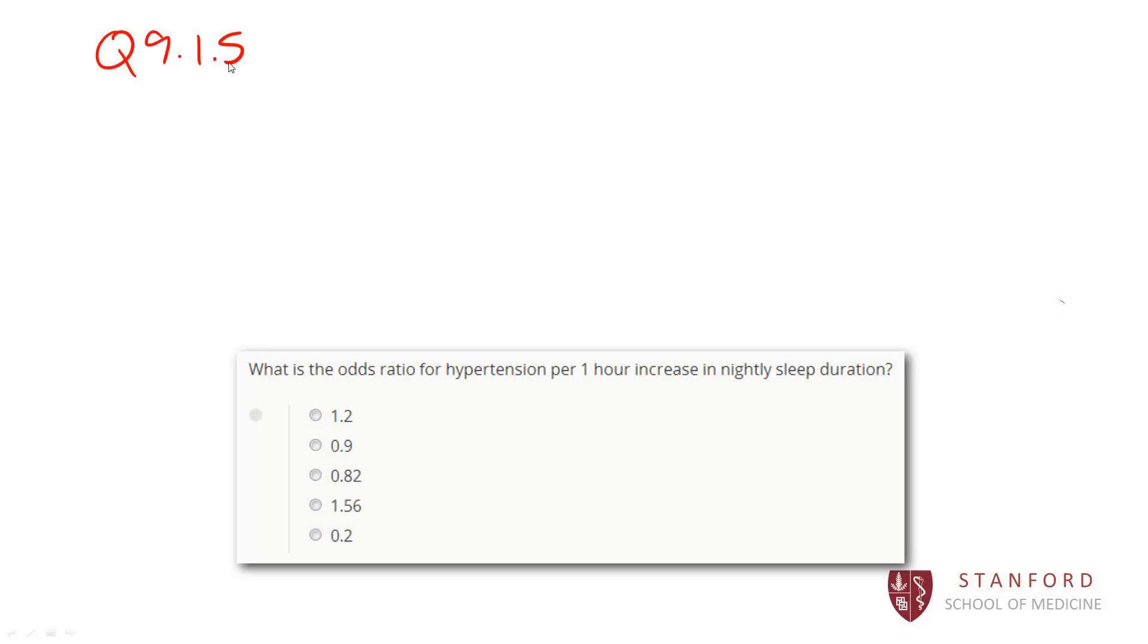So we're given a logistic regression equation here. The beta coefficient is negative 0.2. That is a direct interpretation as an odds ratio. So we just exponentiate the beta coefficient of negative 0.2. That gives us an odds ratio of 0.82. So C, 0.82 is the correct answer here.